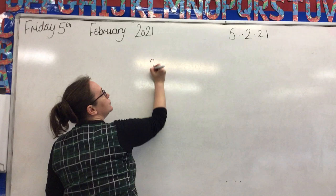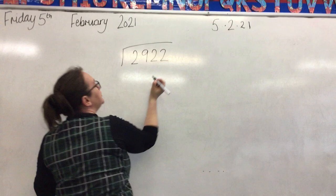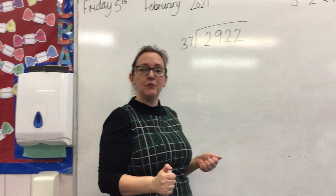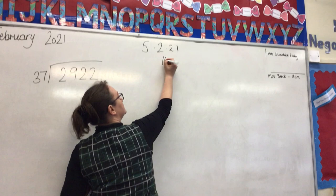So if I was dividing 2,922 by 37, that's what I want to work out. First things first, you need to do your key.